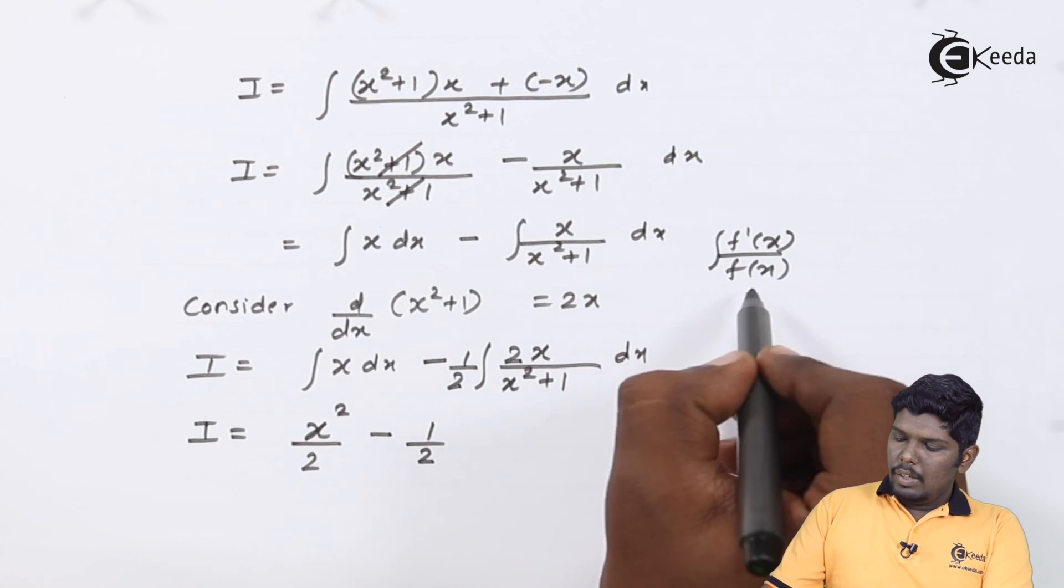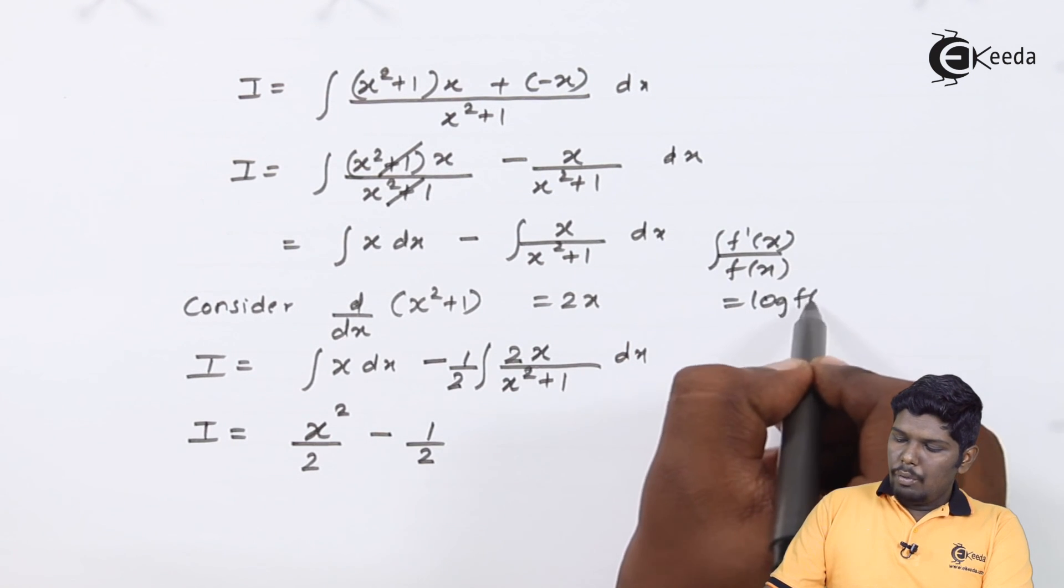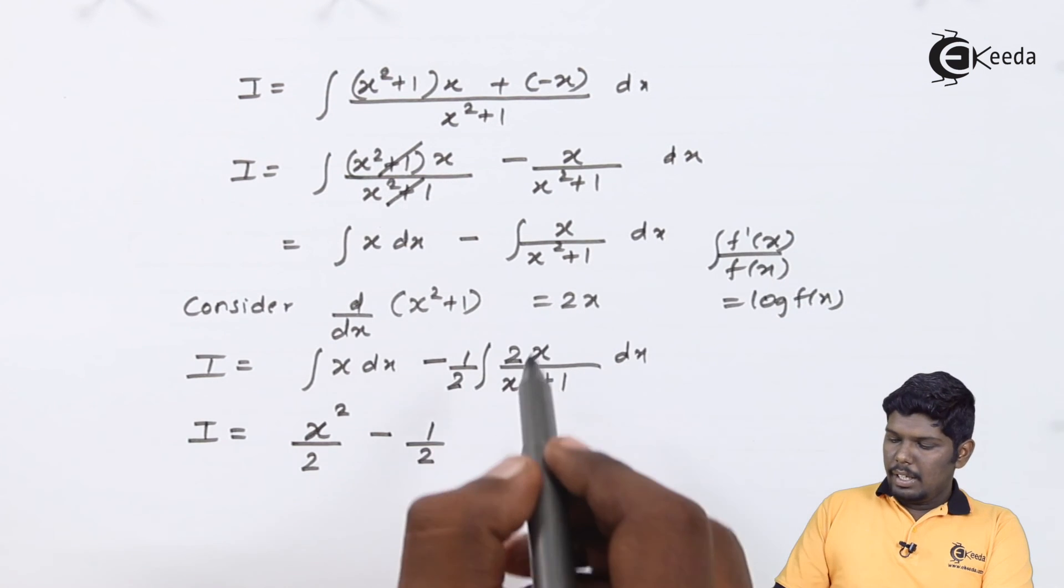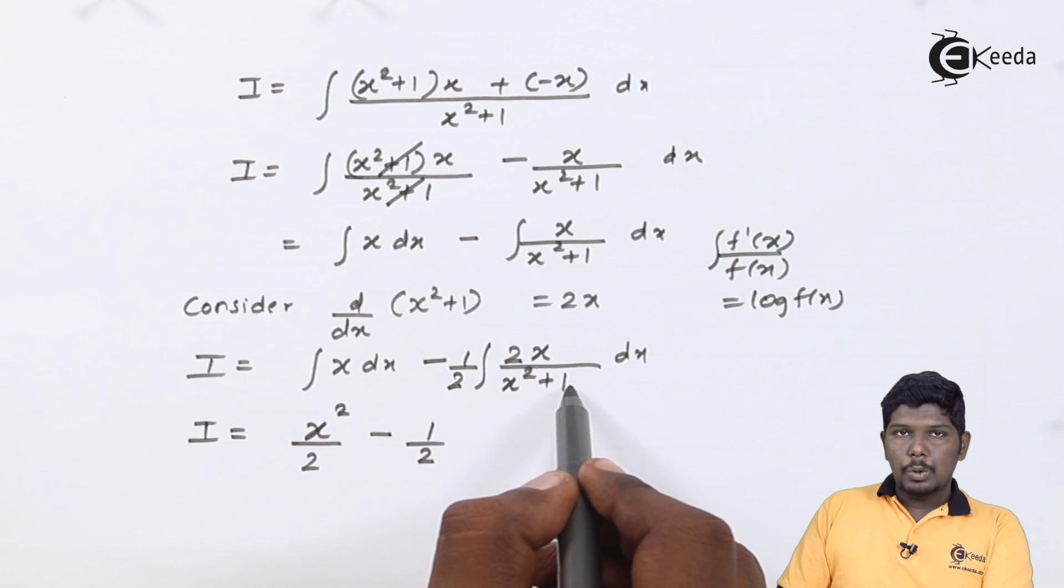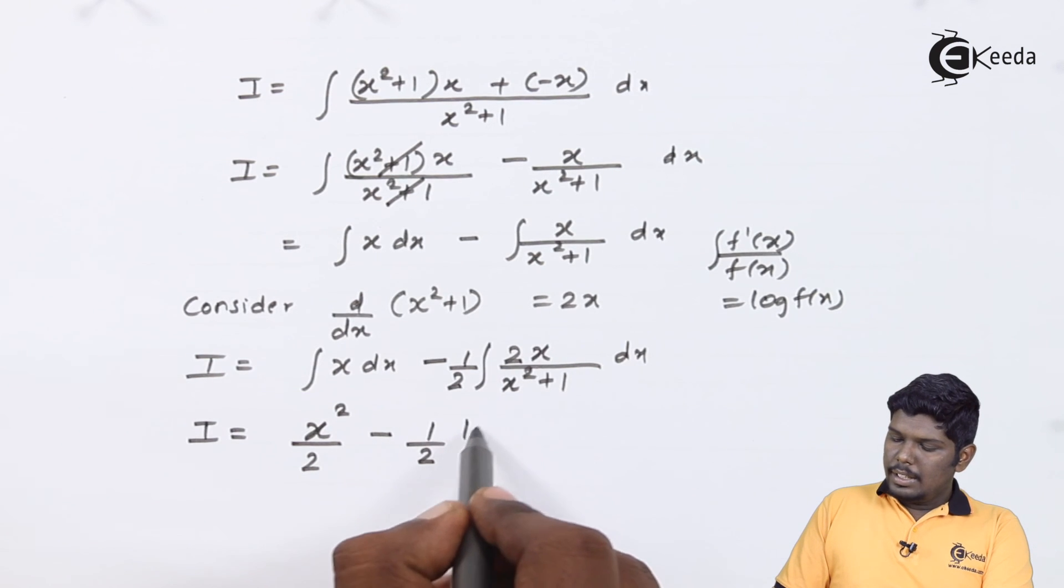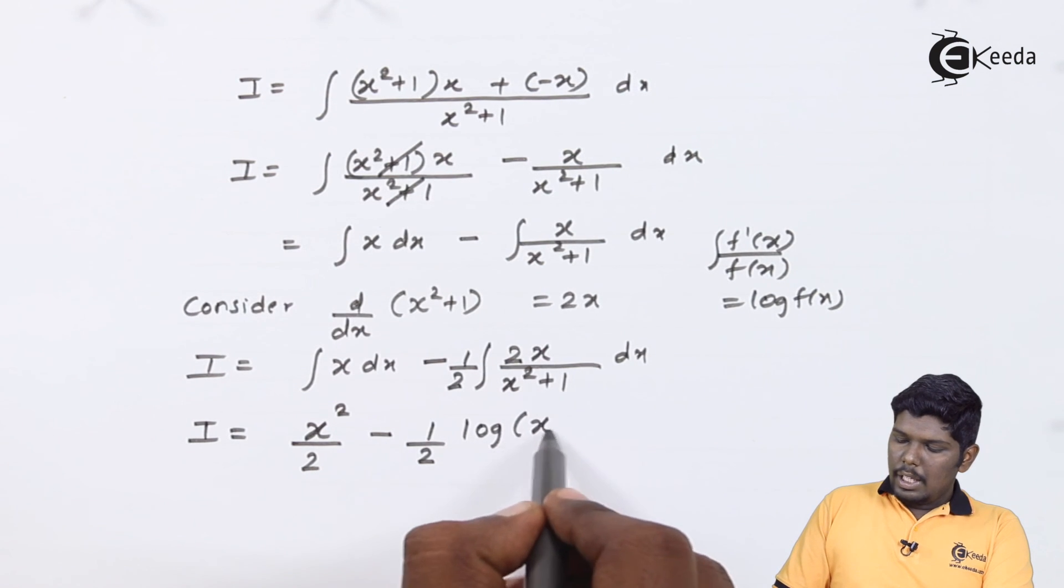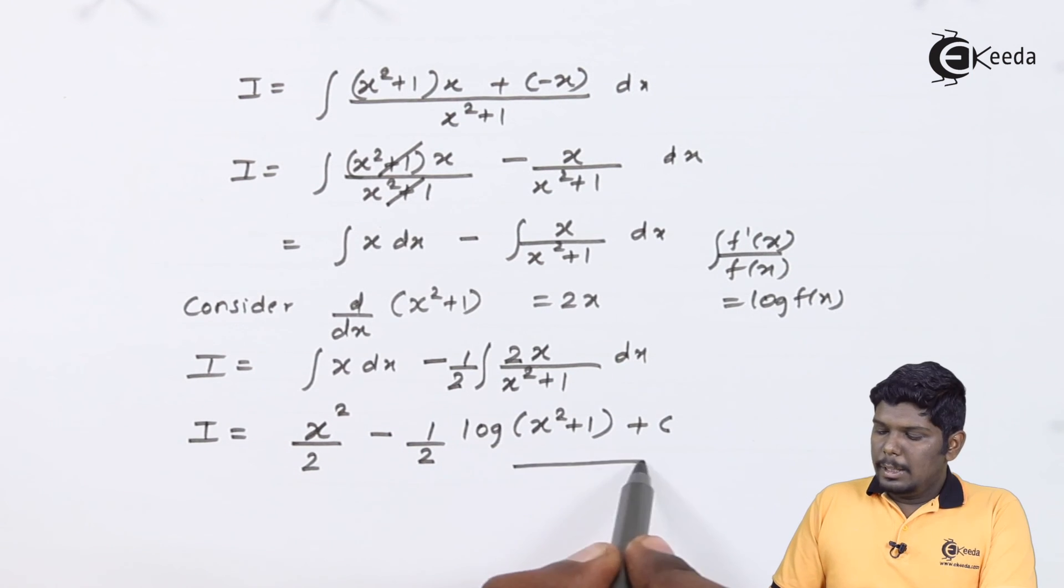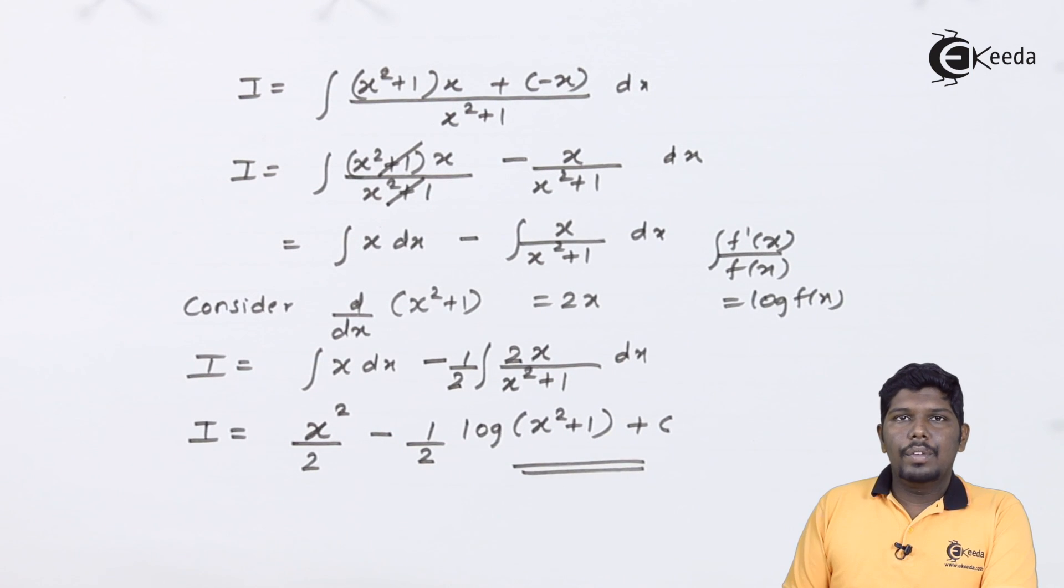The derivative of f(x) should be present in the numerator. As we have already checked, derivative of x²+1 is 2x. The answer will be log of x²+1 plus c. This becomes the integration of the given function.